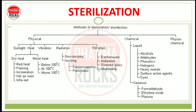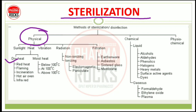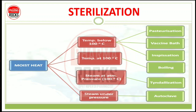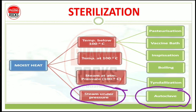So in sterilization, we are covering various techniques. In part 1, we studied about sterilization. In part 2, we studied about dry heat sterilization. In part 3, we studied about moisture sterilization techniques, including 100 degrees Celsius methods. In this video lecture, our topic will be Steam Under Pressure, which is Autoclave. Part 2 topics also included Pasteurization, Vaccine Bath, Inspissation, Boiling, and Tyndallization.